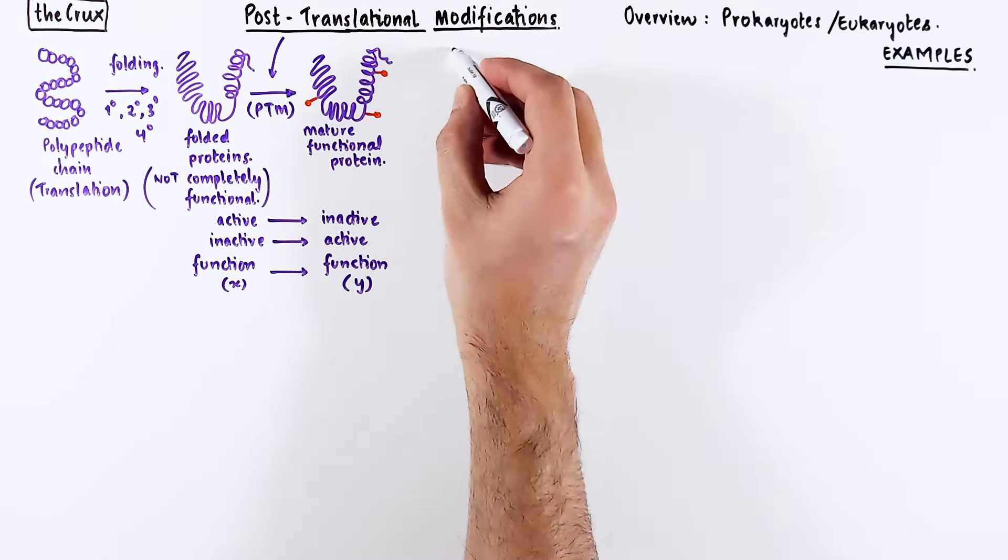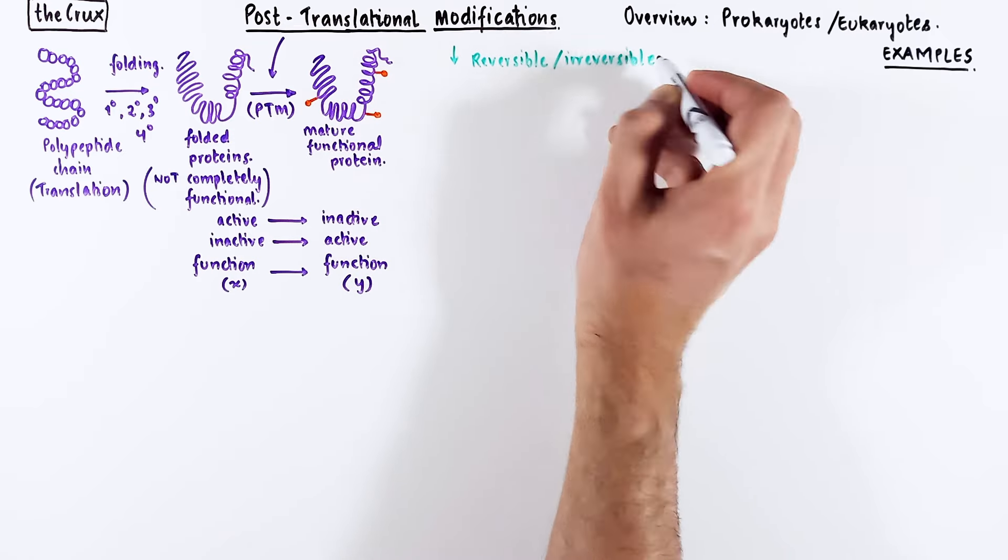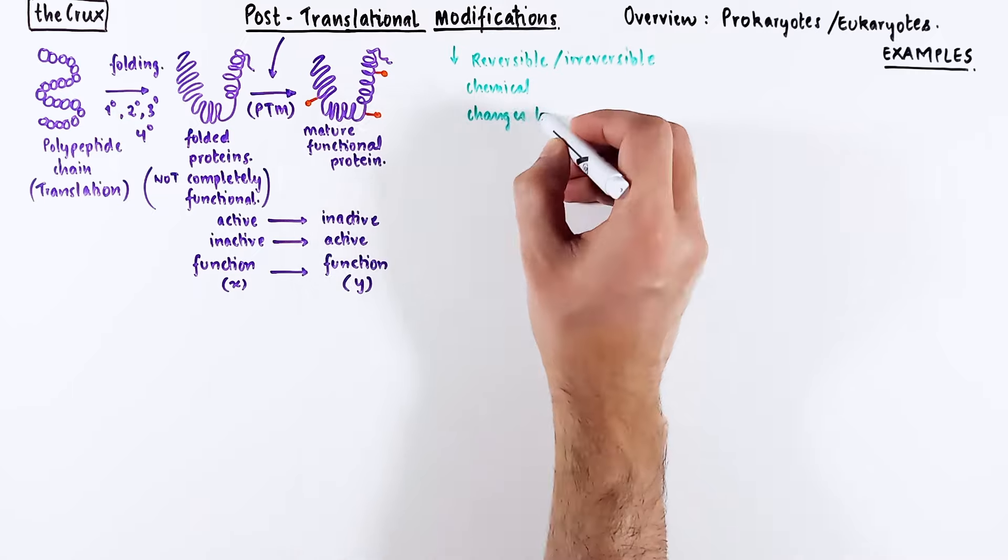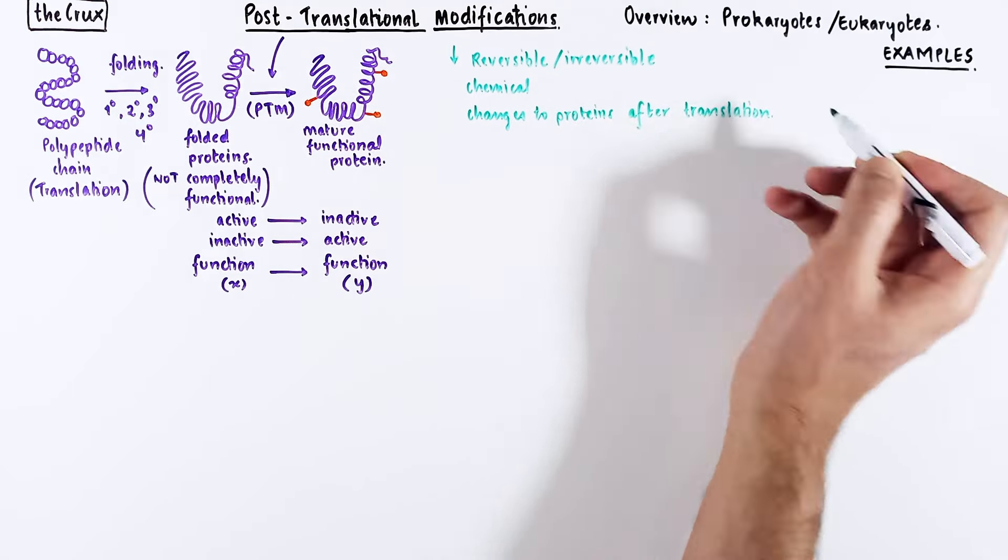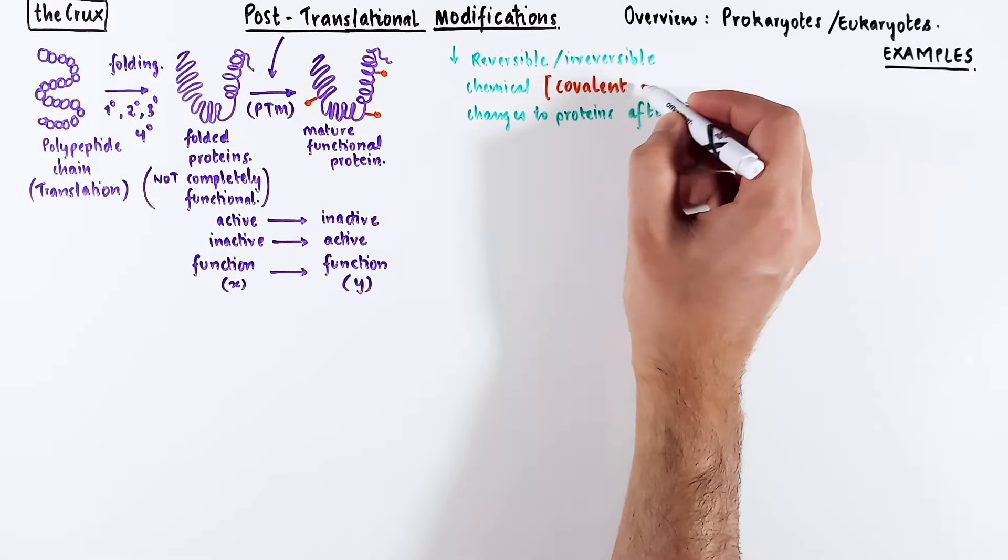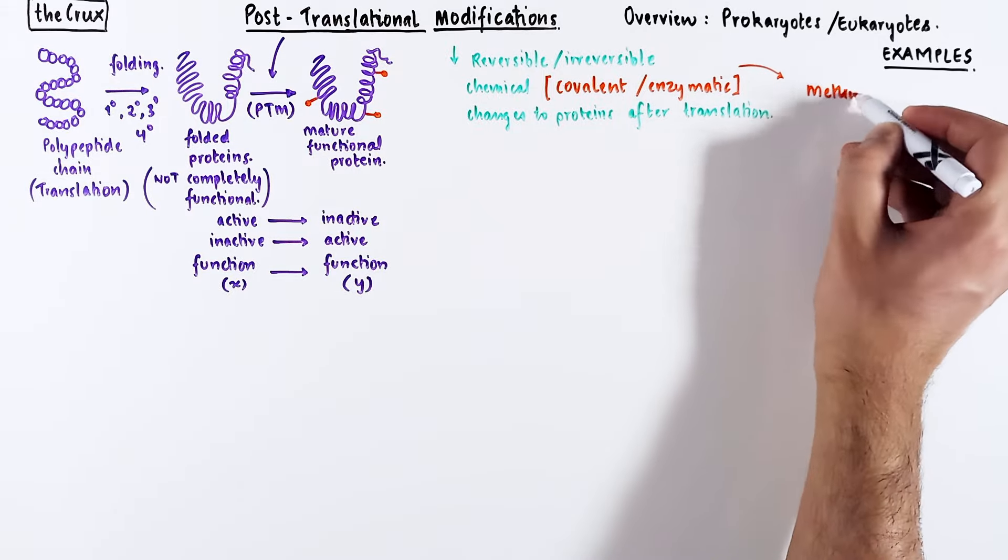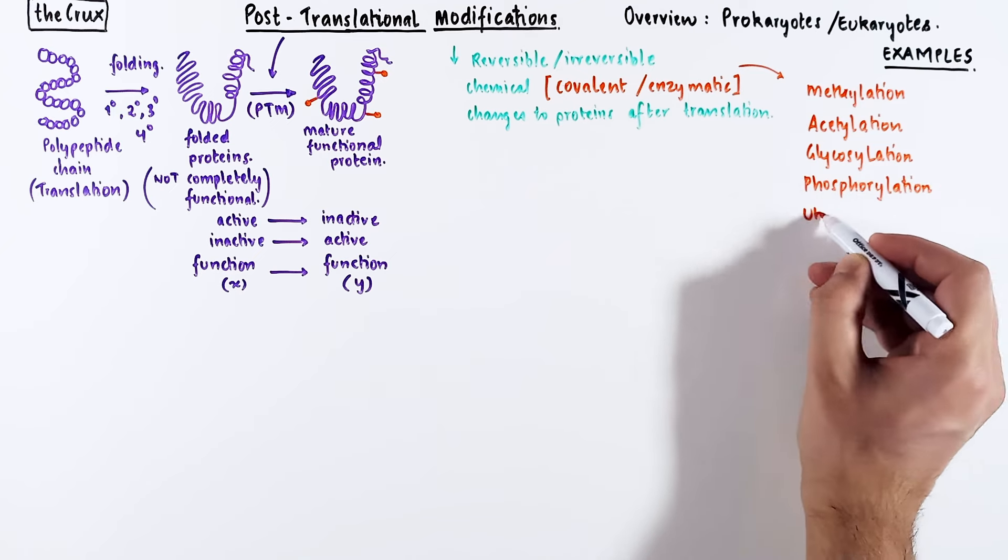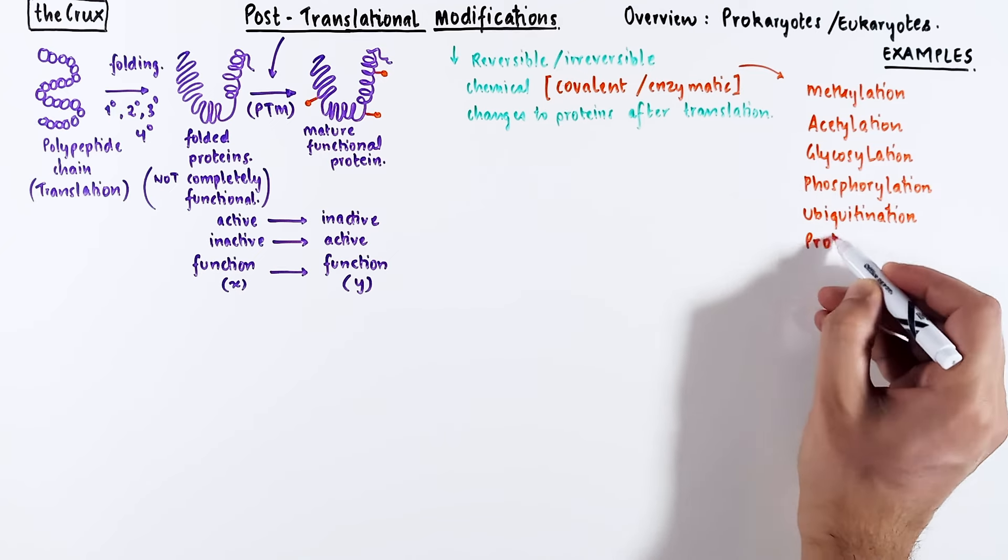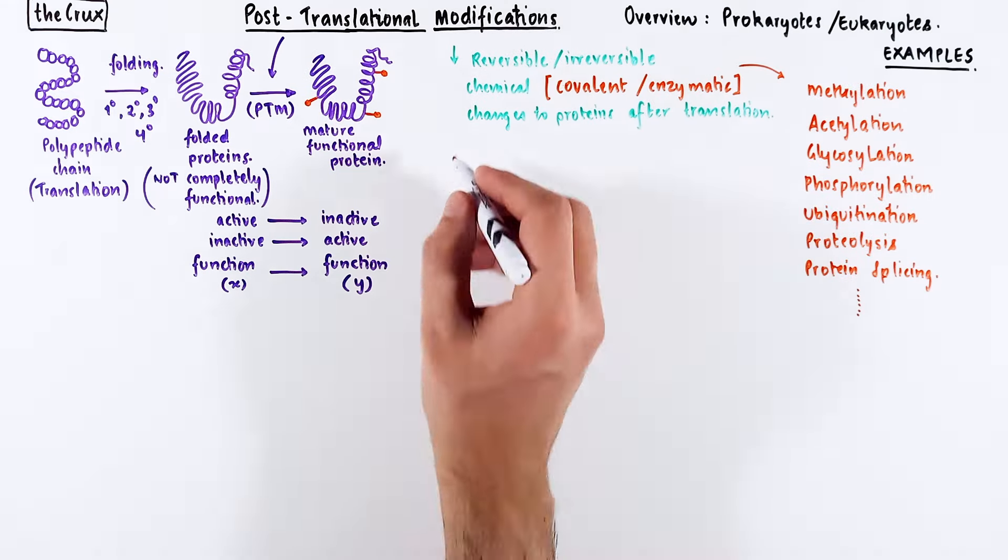Let's give a loose definition of post-translational modifications. These are reversible or irreversible chemical changes to proteins after translation. These chemical modifications are typically covalent modifications driven by enzymatic reactions. These modifications have names such as methylation, acetylation, glycosylation, phosphorylation, ubiquitination, proteolysis, protein splicing, and many more. For the sake of brevity, we'll limit our scope to these specific ones.